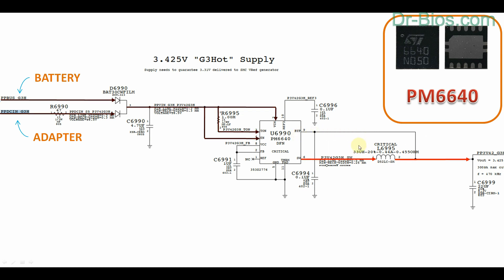Since this is one of the mostly used ICs for generating PP3V42 underscore G3H voltage, I've explained a bit so that you'll know how this IC works.